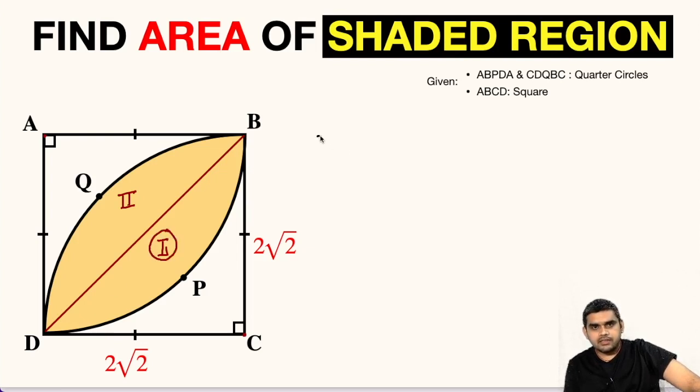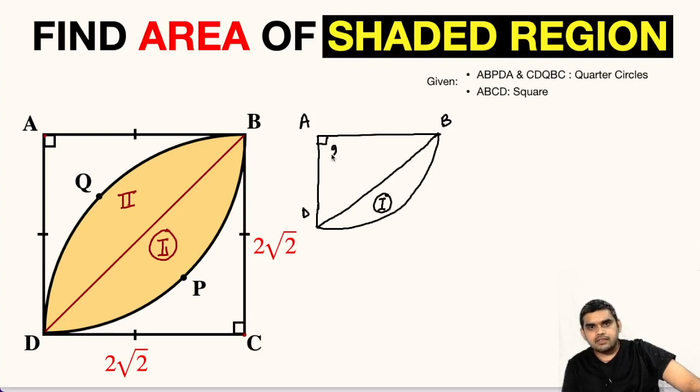Let me draw it outside. This point is A, this is B, and this point is D. Now, this is the quarter circle, BD is the diagonal, this is the first area which we are interested in finding, this angle is 90 degrees.